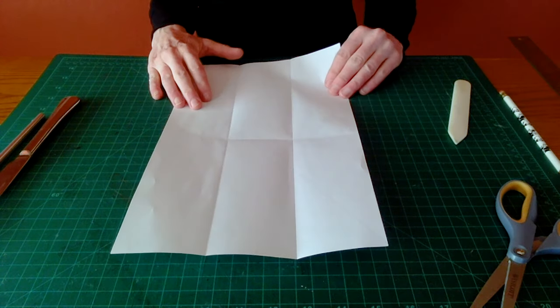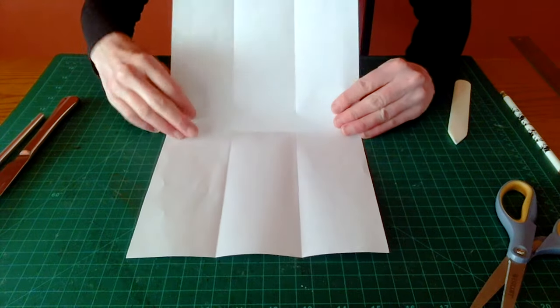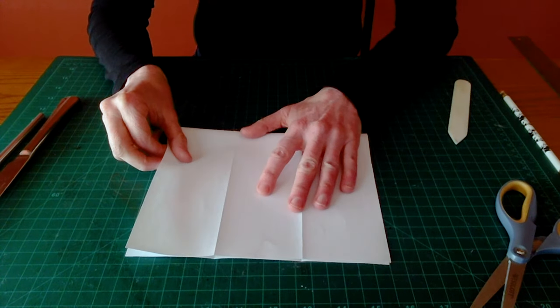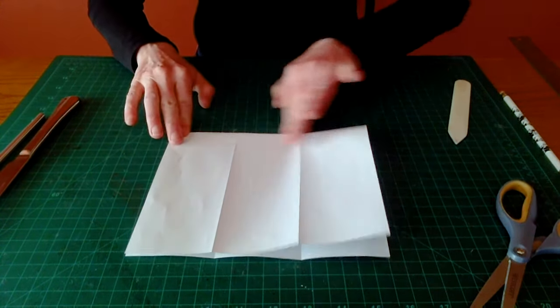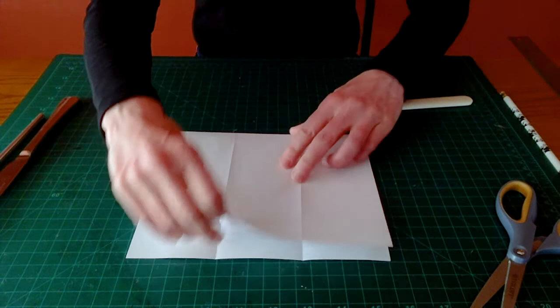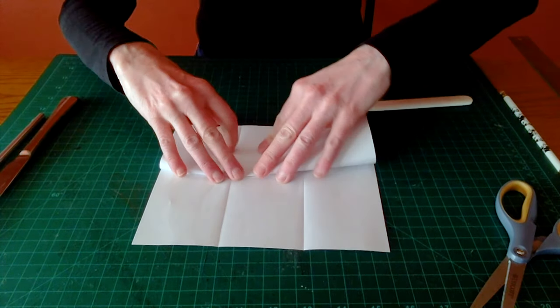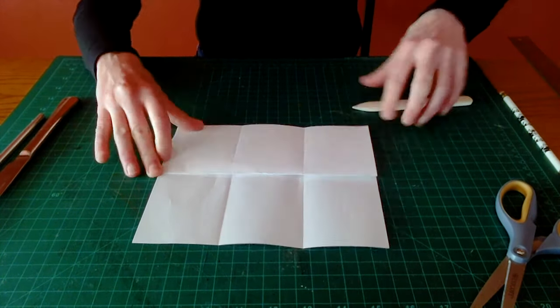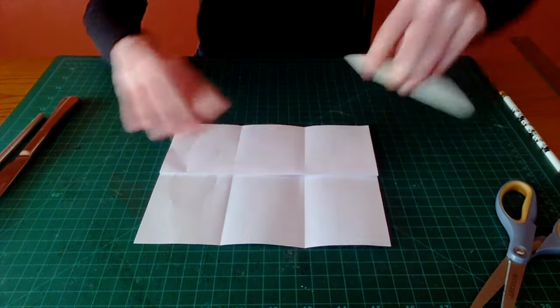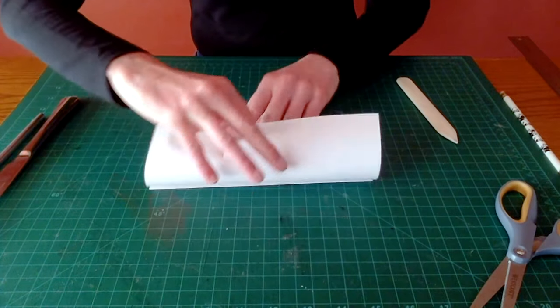Next we're going to fold our paper vertically into fourths. We'll fold it in half top to bottom, and fold our top layer back down to that fold. Turn our paper over, and again fold top to bottom.